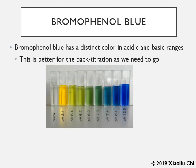In this experiment, we use bromophenol blue as the indicator. Bromophenol blue has distinct colors in acidic and basic ranges. Since antacids contain weak bases, the solution should appear blue at the beginning. When an excess amount of hydrochloric acid is added, the solution becomes acidic and turns yellow. When we back titrate the excess hydrochloric acid with sodium hydroxide, the solution eventually becomes neutral and the color changes to greenish blue — and that is the endpoint.